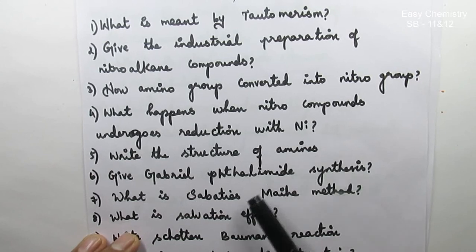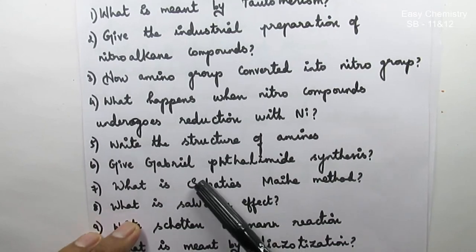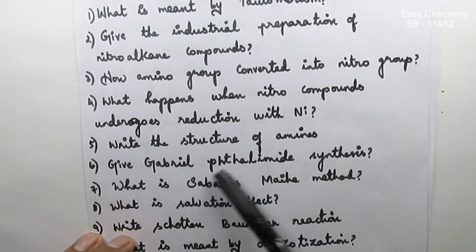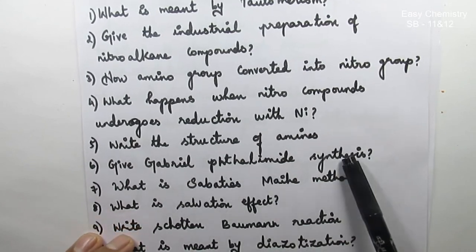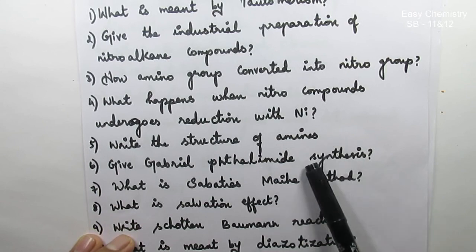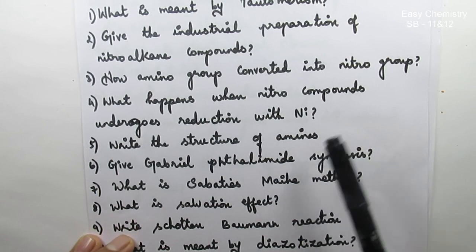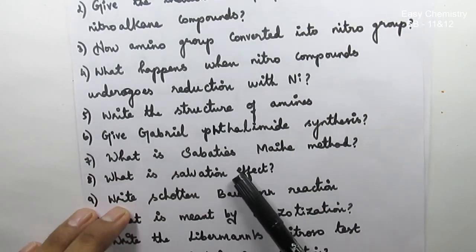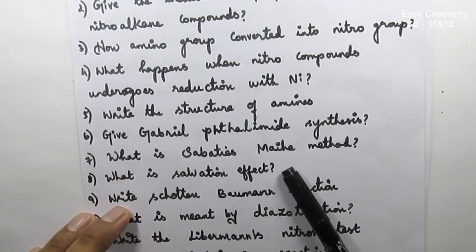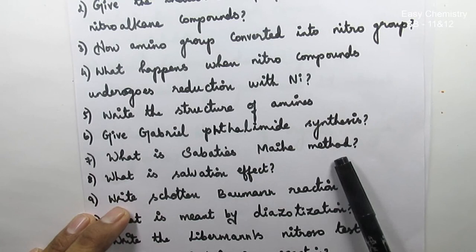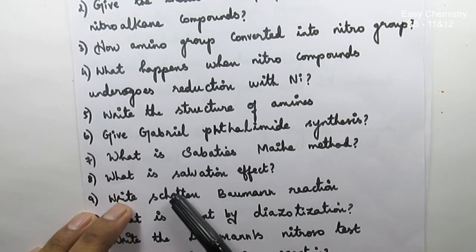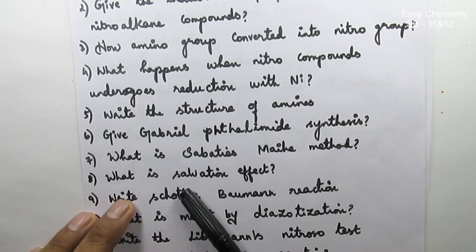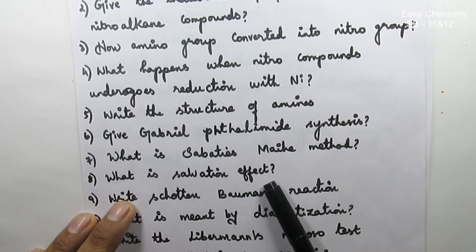Question number 6: Give Gabriel Phthalimide Synthesis — a scientist's name reaction, this is very important. Question number 7: What is the Sabatier-McKee Method? Question number 8: What is the Solvation Effect?